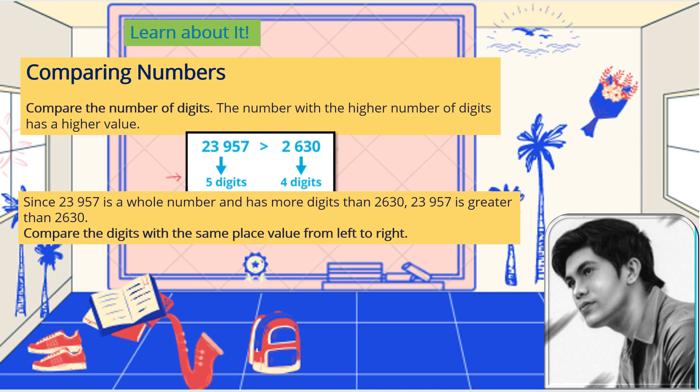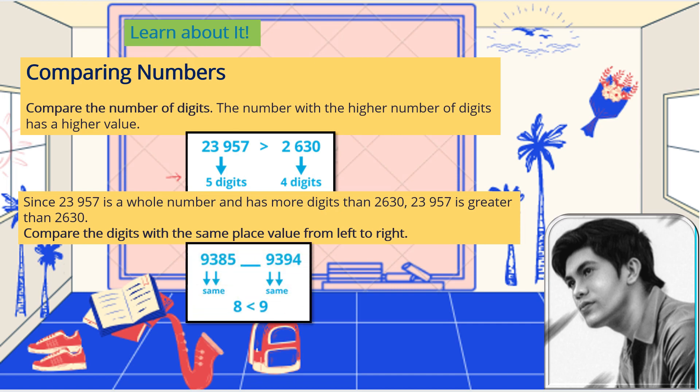Compare the digits with the same place value from left to right. When comparing numbers, you always start from the left. For example, 9,385 and 9,394 — they both have 4 digits, so you cannot directly identify which number is higher.